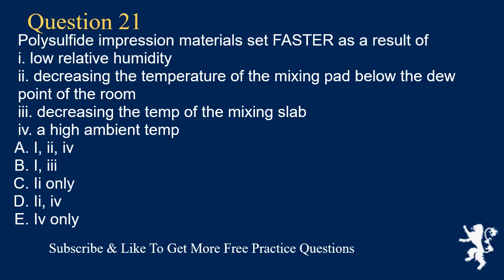Question 21. Polysulfide impression materials set faster as a result of: 1. Low relative humidity, 2. Decreasing the temperature of the mixing pad below the dew point of the room, 3. Decreasing the temperature of the mixing slab, 4. A high ambient temperature. A. 1,2,4; B. 1,3; C. 2 only; D. 2,4; E. 4 only. Answer: E. 4 only.